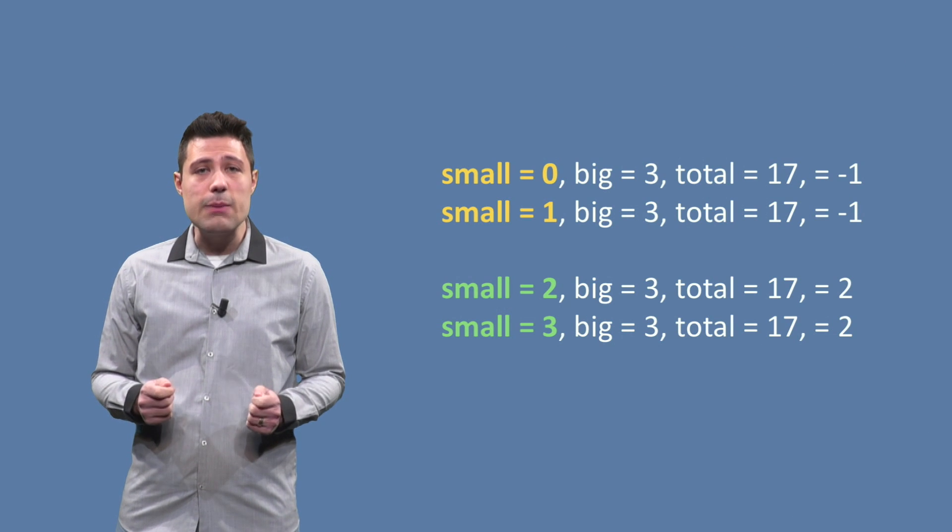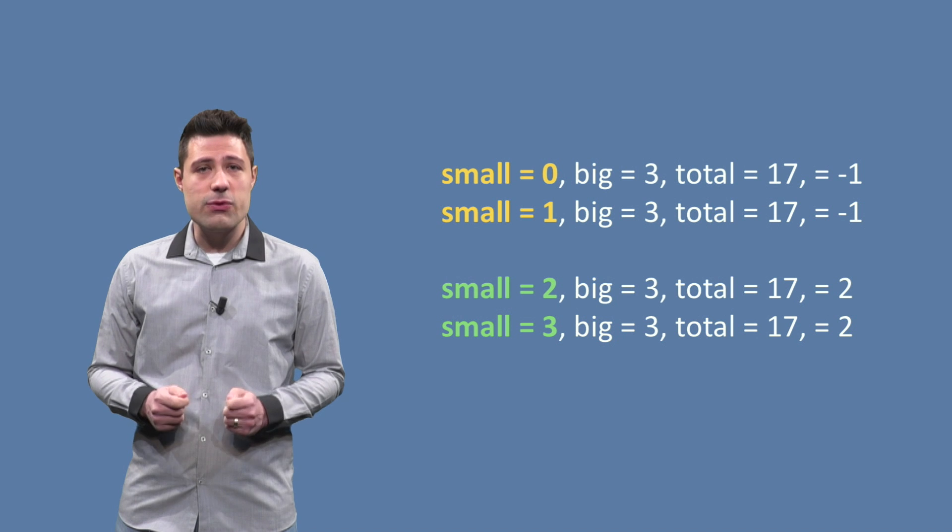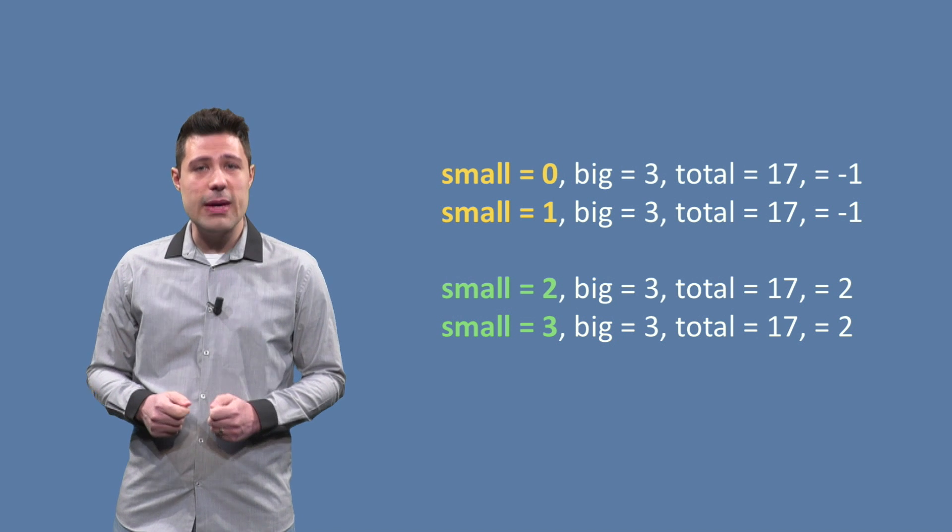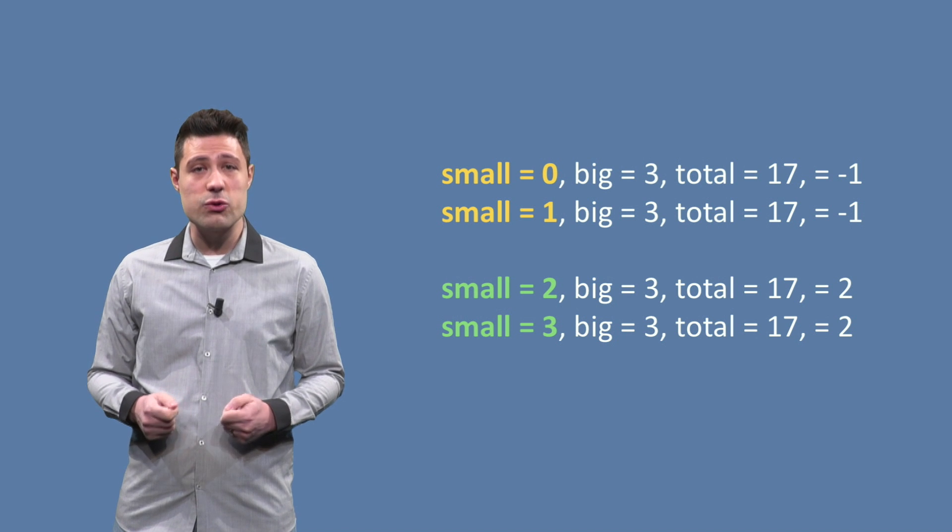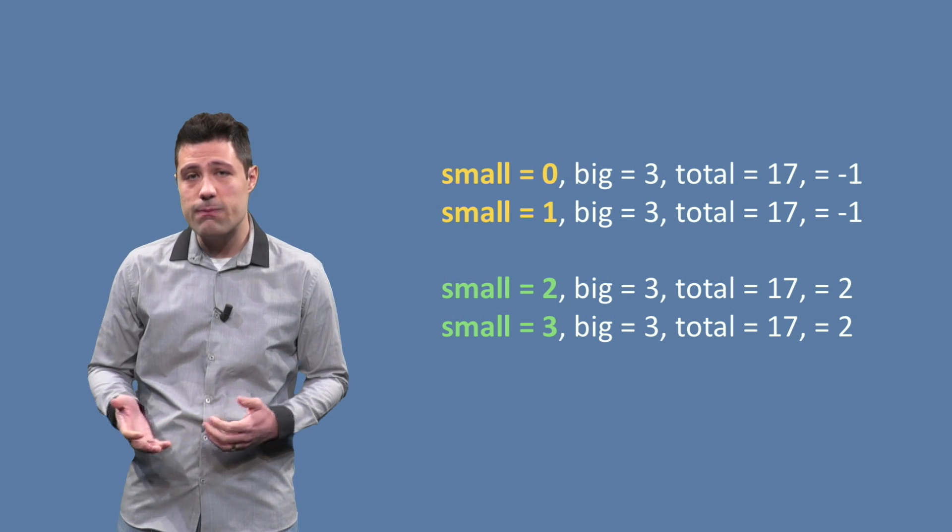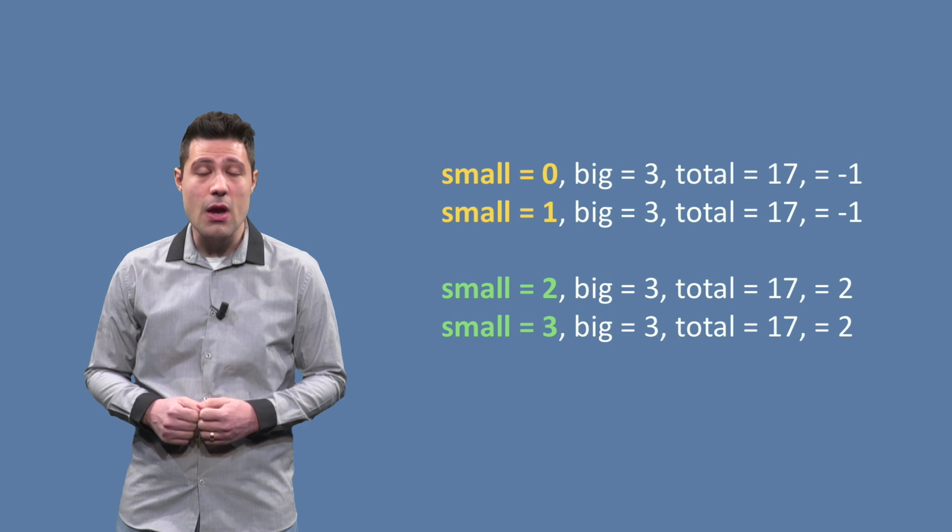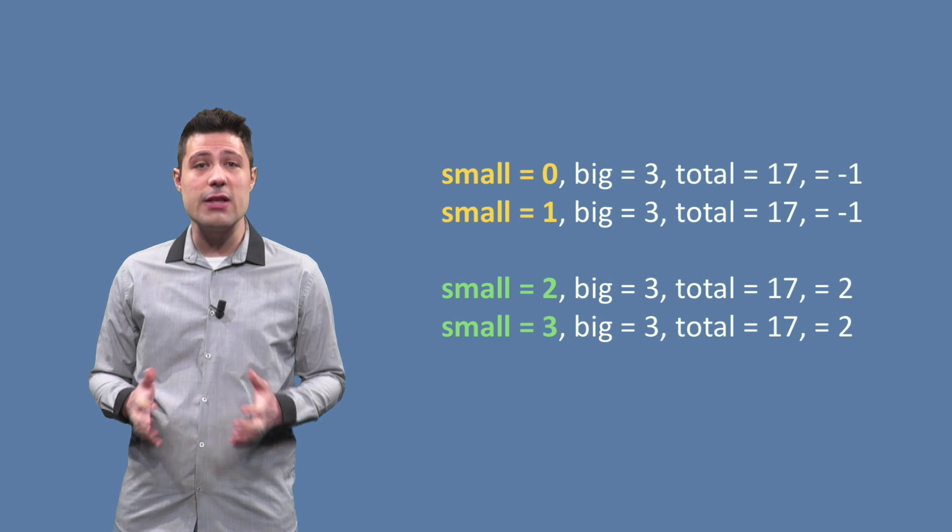Let's look closer to the buggy input. Given that we have total equals to 17 and big equals to 3, the small needs to be greater than or equal to 2, like 3, 4, 5, etc. For this instance, to have a valid solution.